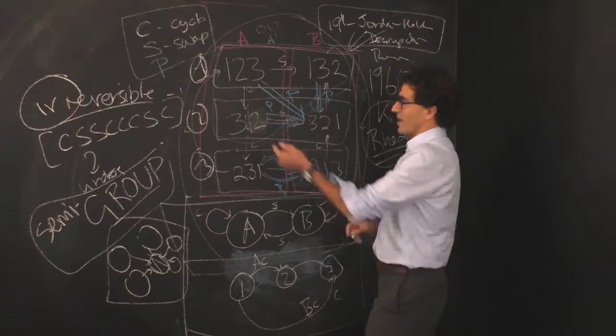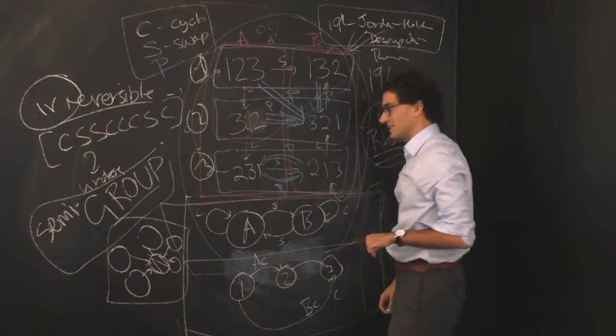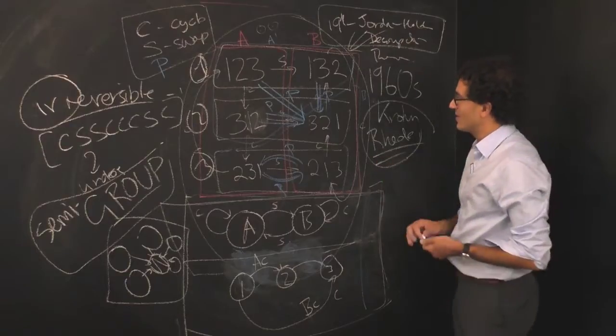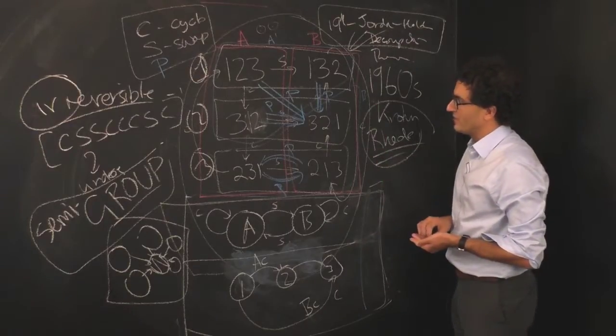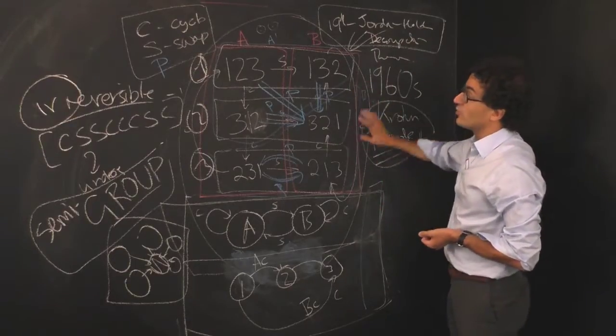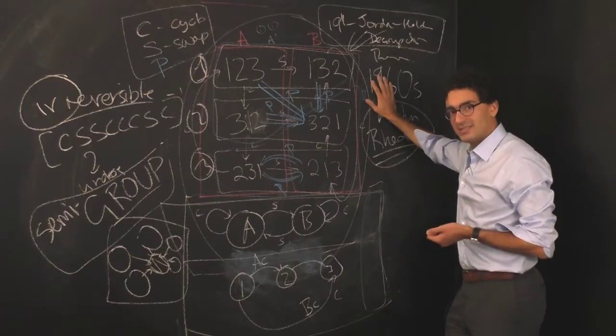one of the things is there may not be, for every emitted symbol, there may not be a transition. Rhodes has a nice story about how you can get around that, but that's up to you if you want to follow that story down. Still, semi-groups are great models of many different processes we have.